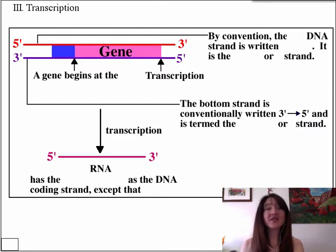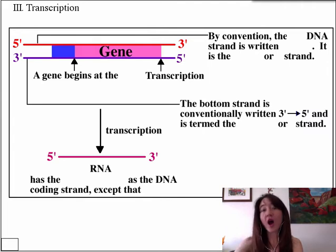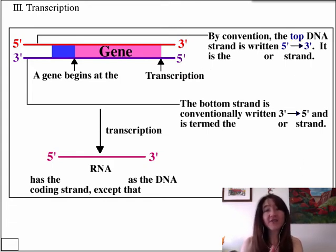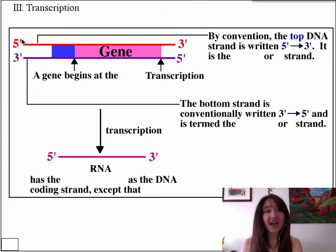There is a lot of vocabulary that surrounds the process of transcription. Let's situate ourselves first looking at a gene — that is the region of DNA that is going to get converted into product, whatever that product may be. We always orient ourselves in the same way when looking at a gene, by convention, with the five prime to three prime strand being the top strand. And by convention, this strand is called the coding strand or the plus strand, always in that five prime to three prime orientation.